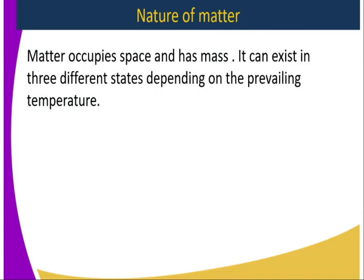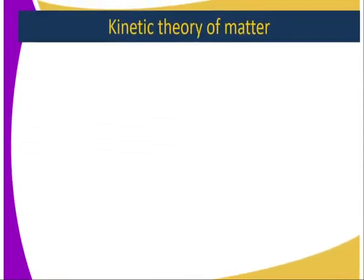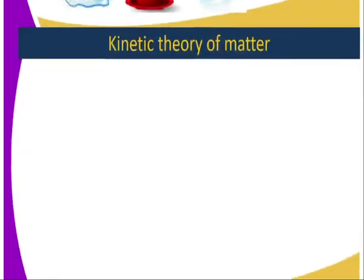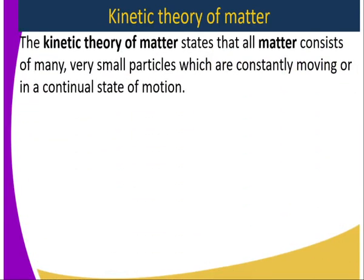The nature of matter: anything that occupies space and has mass. It can exist in three different states depending on the prevailing temperature. These states are: solid state, gas state, and liquid state. So matter can exist in any of these three states depending on the prevailing temperature.